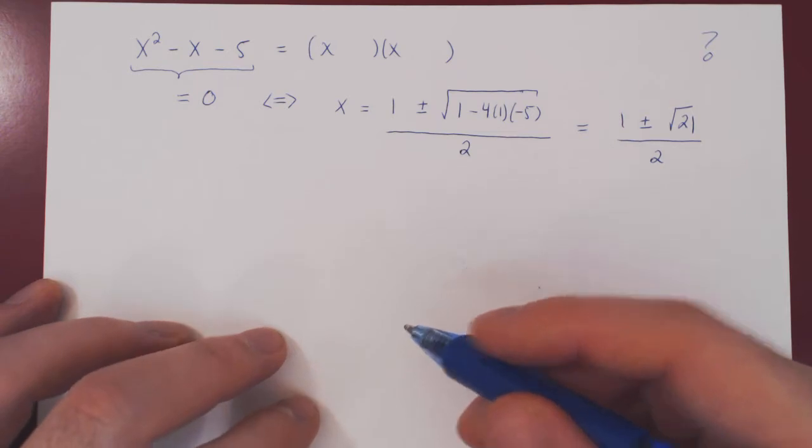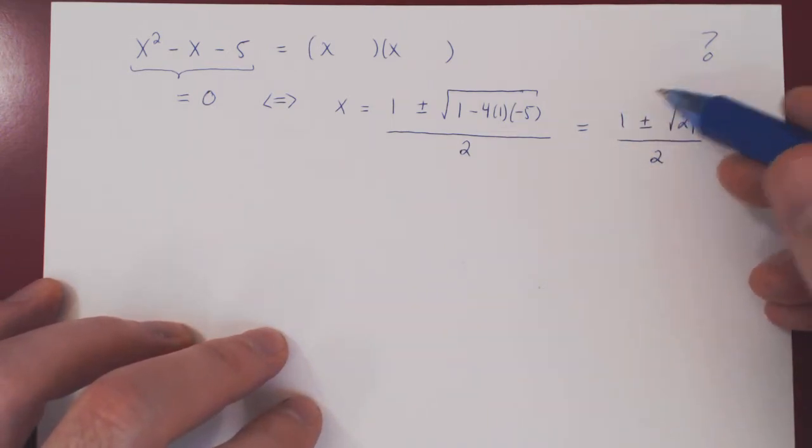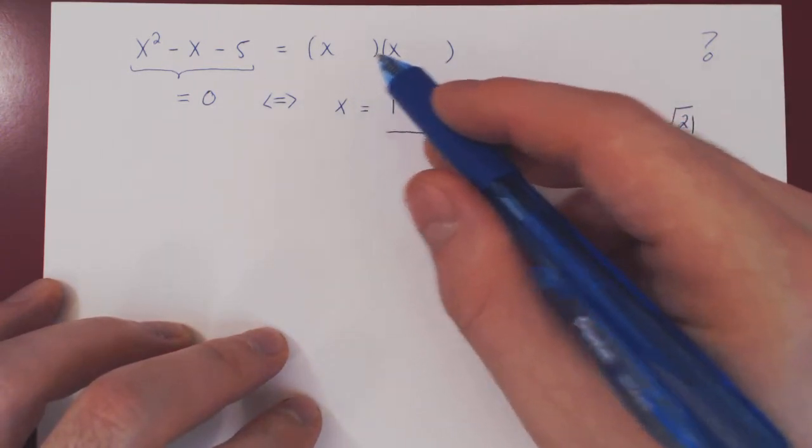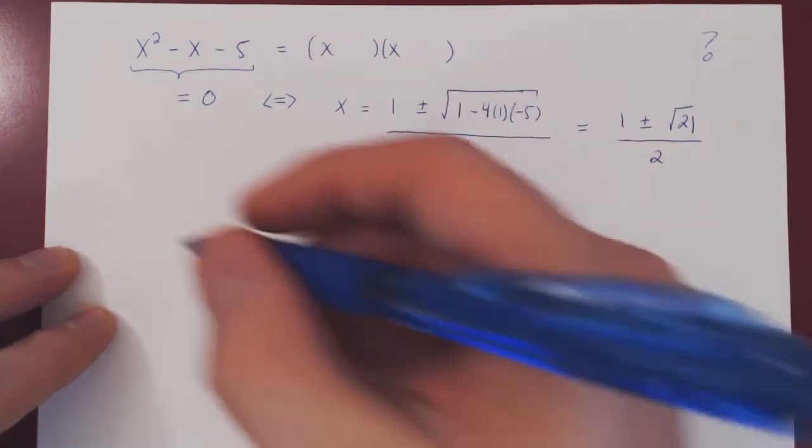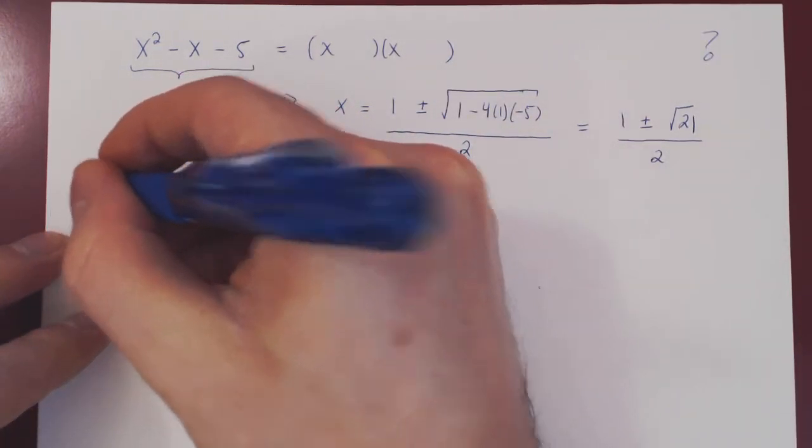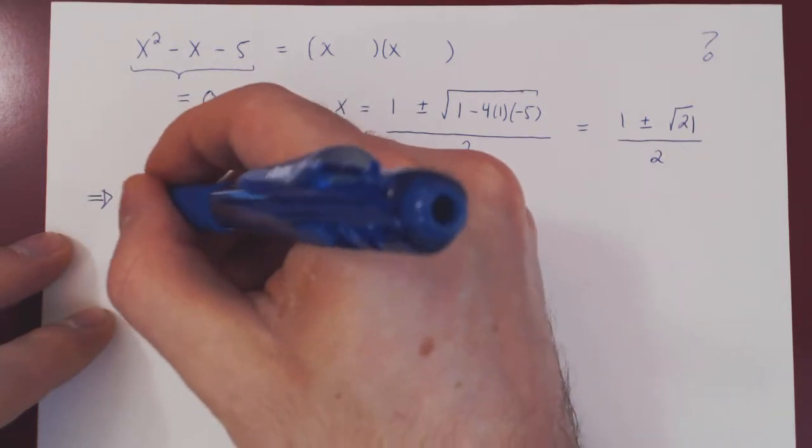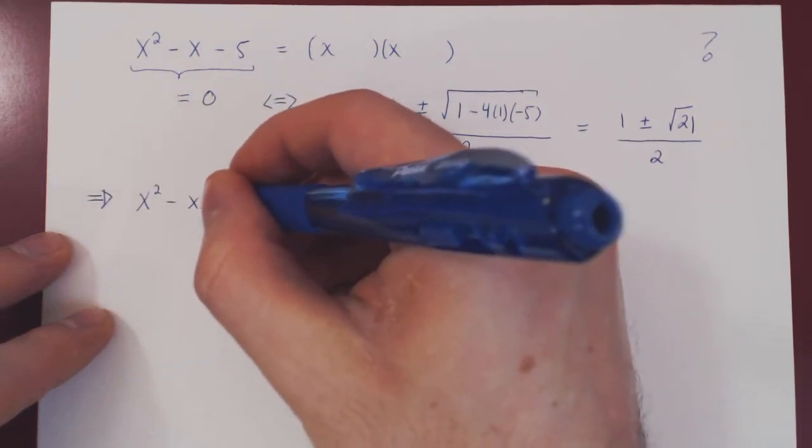And we have our two zeros. As you can appreciate, they're not so obvious. So, the odds are that by inspection, you would have never come up with these two zeros. But once we have them, then we can factor this quadratic very easily.